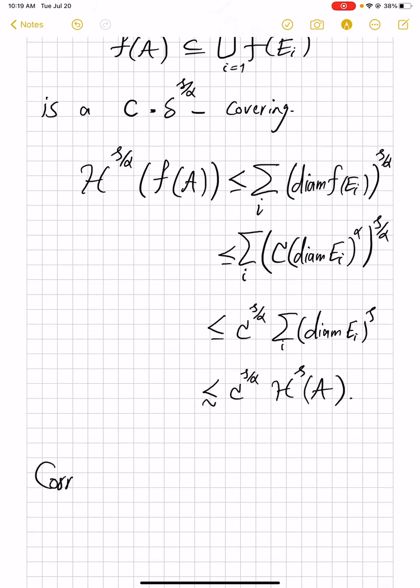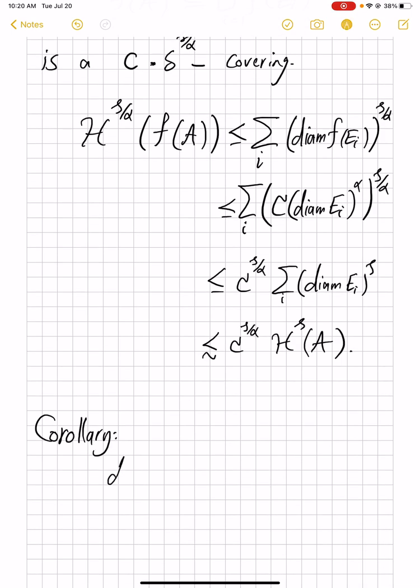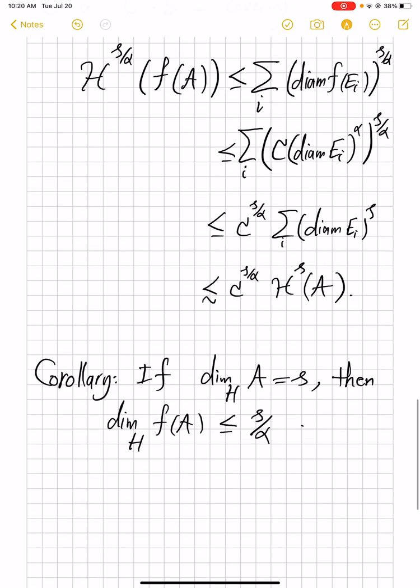What is the corresponding corollary? The corollary is that if the Hausdorff dimension of A is equal to S, then the Hausdorff dimension of the image of that set will be no bigger than S divided by alpha. So that will be the corollary.